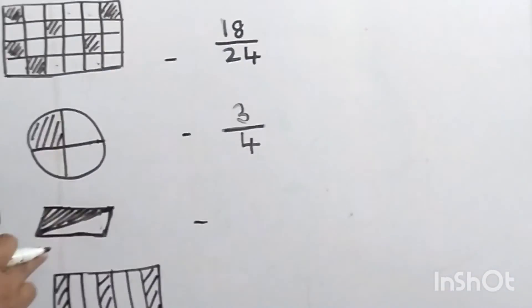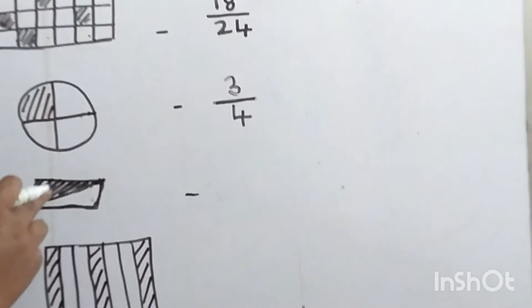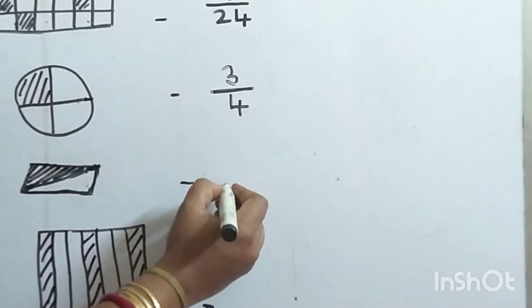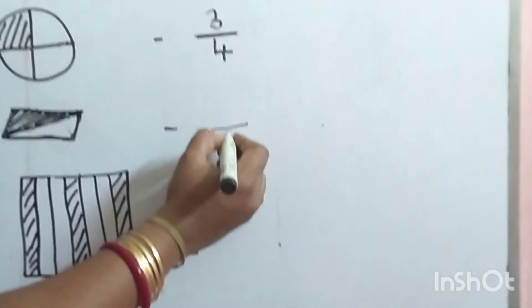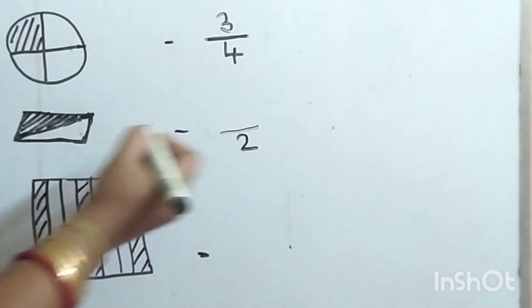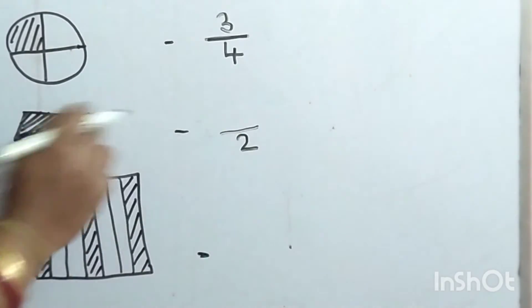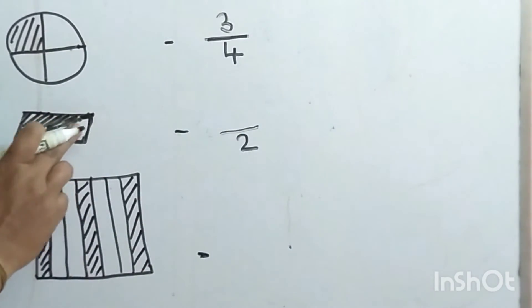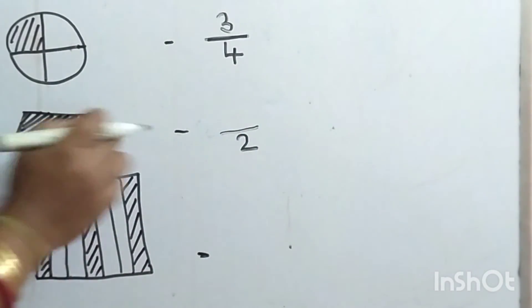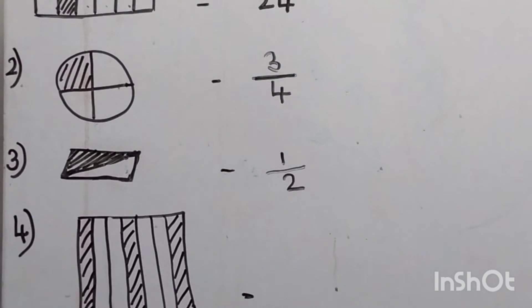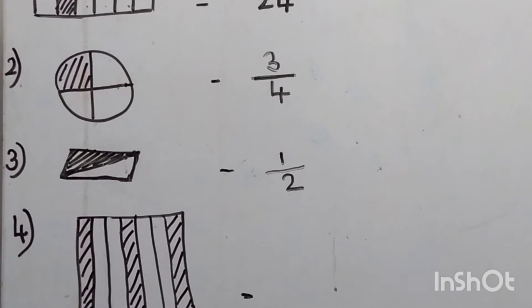The next one. The total number of parts are 2, and one part is unshaded. So the answer is 1 by 2.